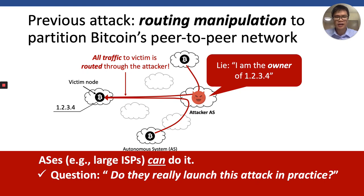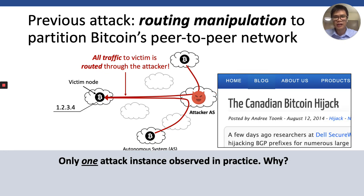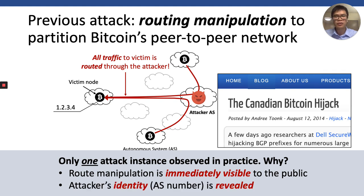The closest incident is one where a Canadian ISP hijacked mining nodes to steal Bitcoin in 2014. We haven't seen any other hijacking attacks that specifically target Bitcoin. And why are there not many such attacks? The reason is simple: route manipulation is immediately visible to the public, and the attacker's identity is also revealed, similar to the Canadian ISP in the previous example.